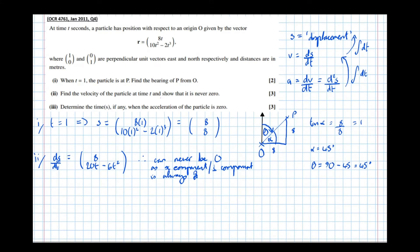Part 3: Determine the times when the acceleration of the particle is zero. Finding dv/dt by differentiating again: the x component gives 0, and the y component gives 20 - 12t.